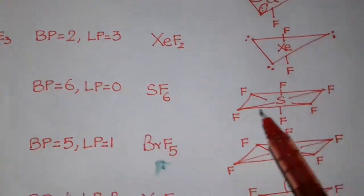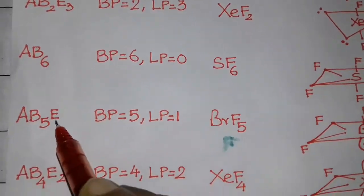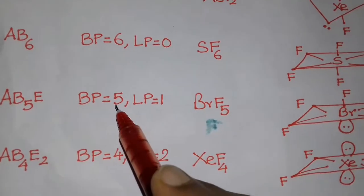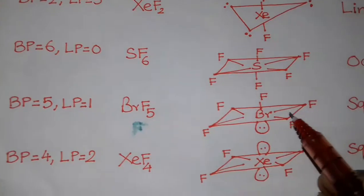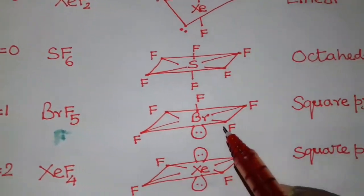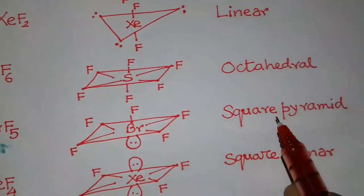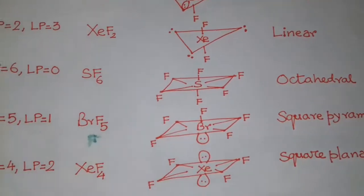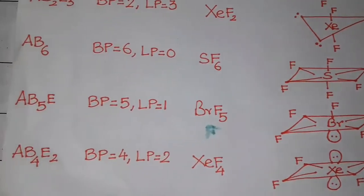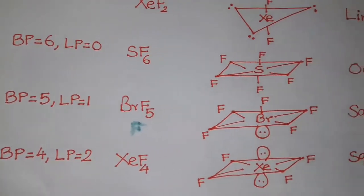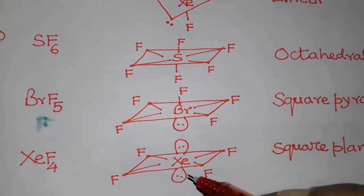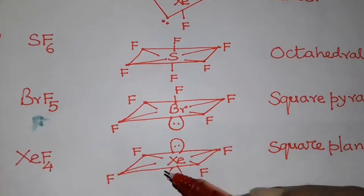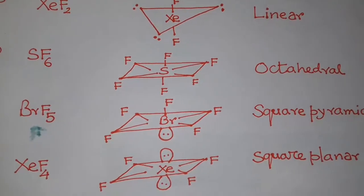Next case is H equals 6: bond pair is 6 and lone pair is 0 — normal octahedral shape. Next, with one lone pair (AB5E): bond pair is 5, lone pair is 1 — BrF5. The lone pair is placed in the axial position and the shape is square pyramidal. Next case is XeF4 (AB4E2), in which lone pairs are placed at 180-degree angles — axial positions above and below the plane — and the shape is square planar.